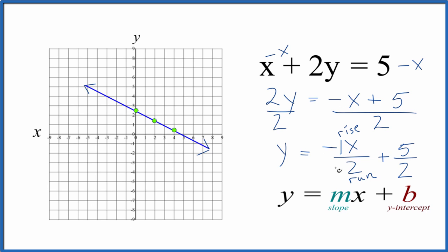Our slope, that's negative 1 over 2. And our y-intercept, that's 5 over 2, 5 halves.